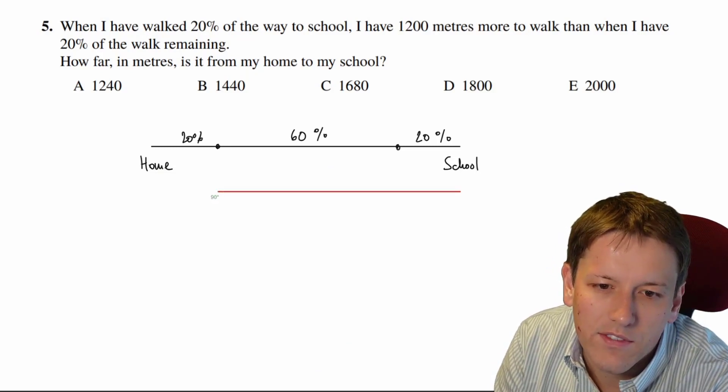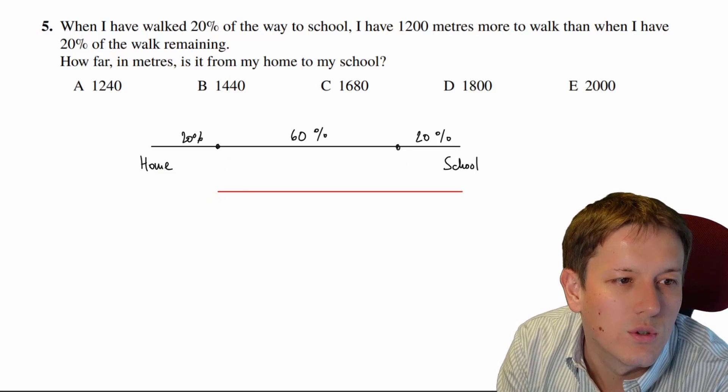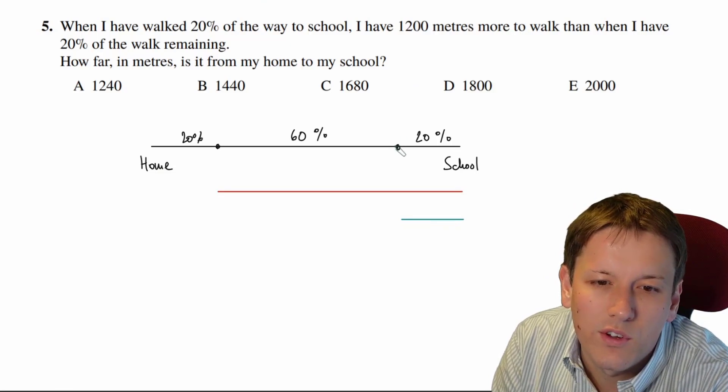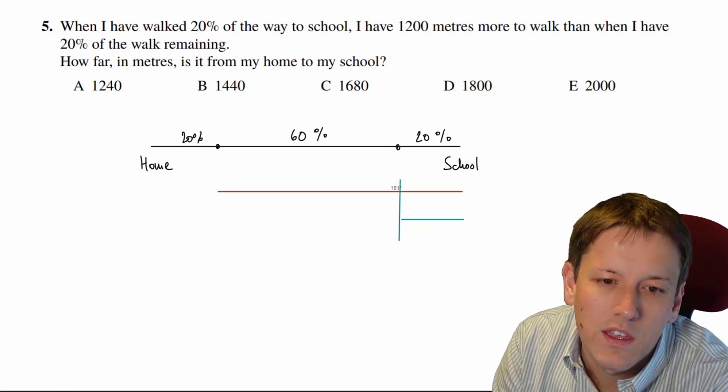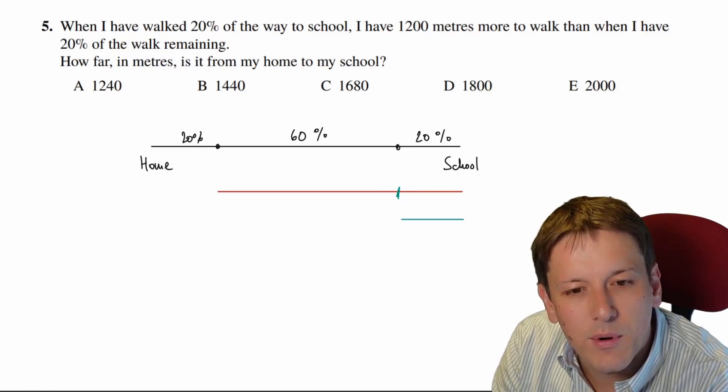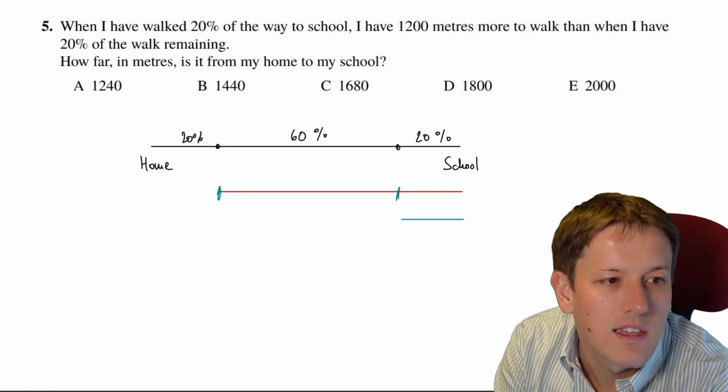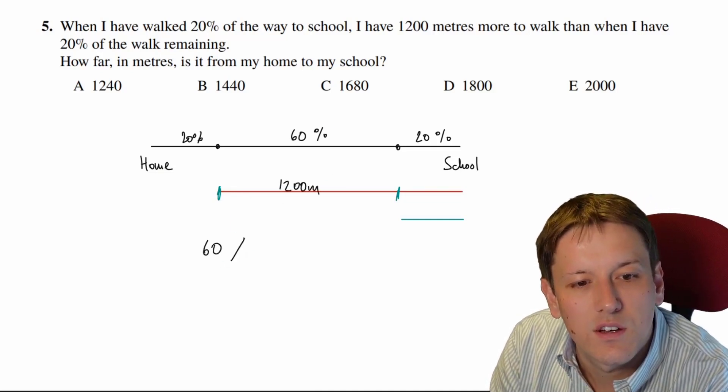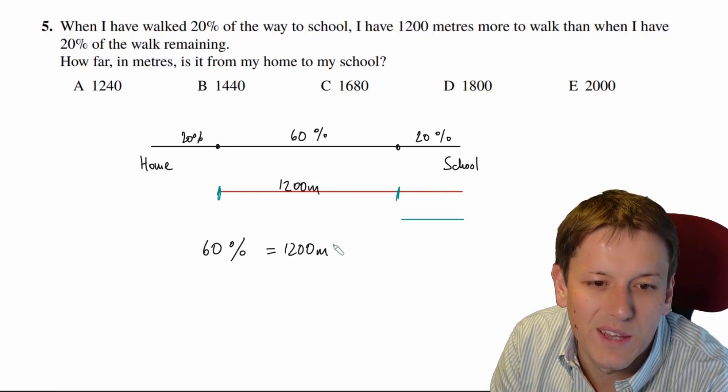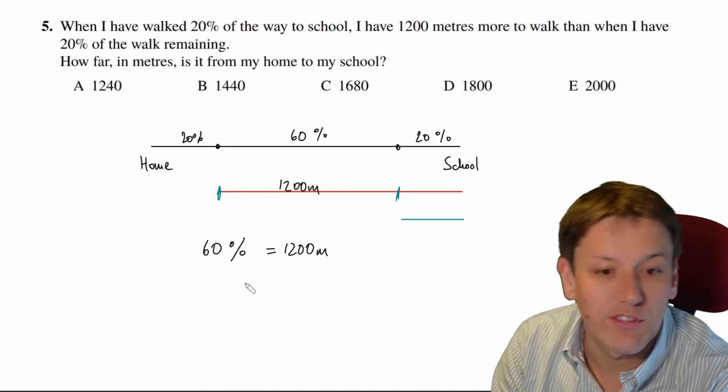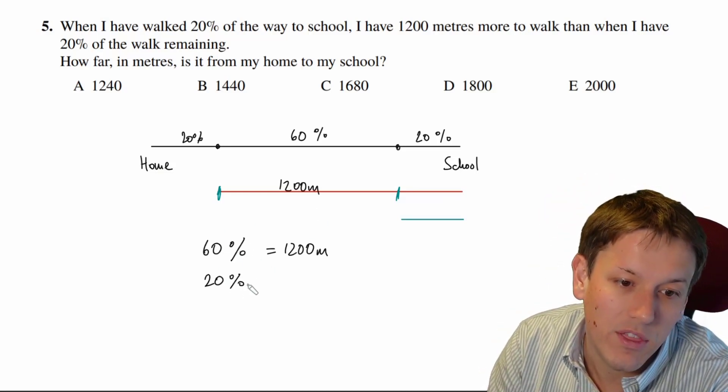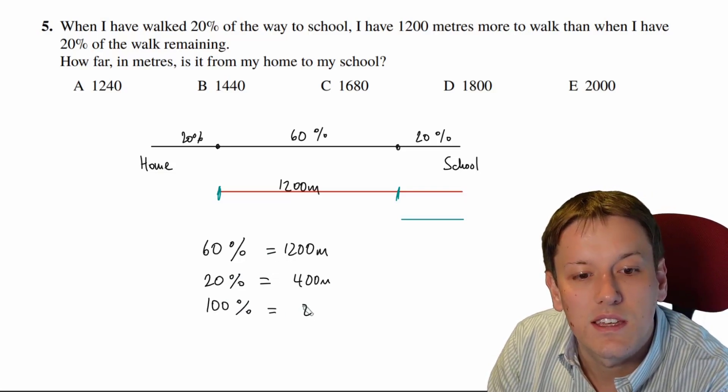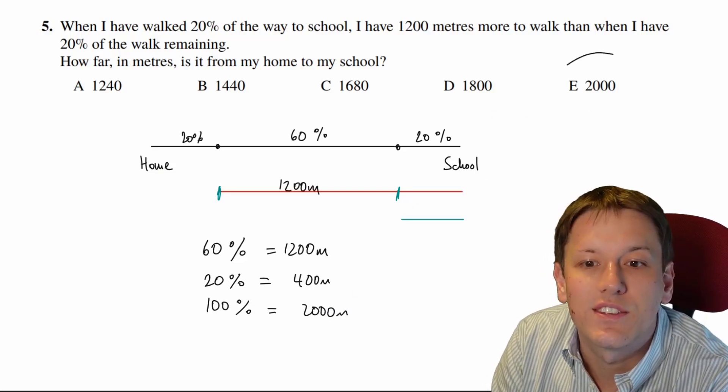So this distance here, it's saying, if I go along this red line from here to school, is 1,200 metres more than if I go from when I've got 20% remaining to school. So if I sort of cut off at that point here then, and take this distance here, this must be the extra 1,200 metres, and so we know that 60% of the journey is equal to 1,200 metres. So we just need to scale this up to 100% now, different ways you can do it, perhaps the easiest is just to divide it by 3 and say 20% would be 400 metres, and then times it by 5, and get 100% is 2,000 metres, and then we see that the answer is E.